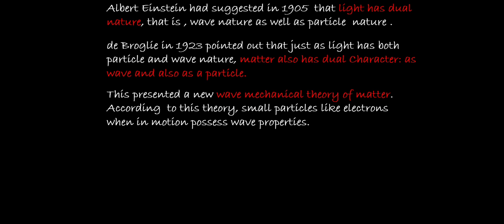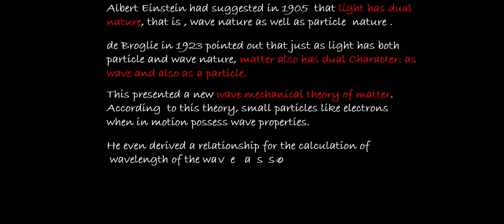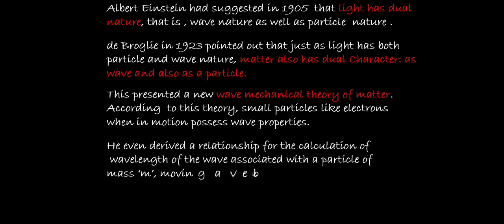According to this, small particles like electrons, when in motion, possess wave properties. He derived a relationship for the calculation of the wavelength of the wave associated with a particle of mass m moving with velocity v: lambda is equal to h by mv. Importantly, he gave a hypothesis — it was a hypothetical thesis. He assumed it but did not prove it experimentally.